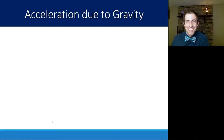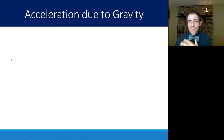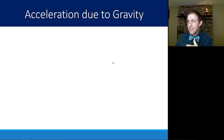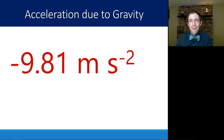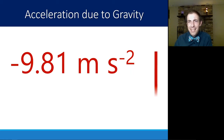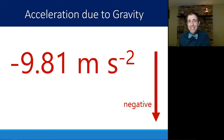Here on Earth we do have air, obviously — if we didn't, we'd have all sorts of other problems. But for slower moving things, we're not going to see enough air resistance to make a huge difference. So when we're talking here on Earth, we are going to use one constant for gravity: all objects will accelerate downward at negative 9.81 meters per second squared. That negative sign is just indicating direction — if positive is up, then gravity's acceleration must be negative.